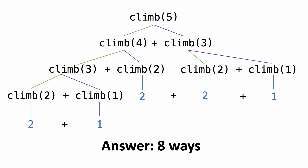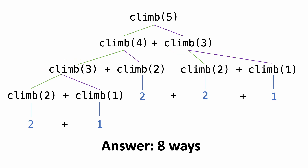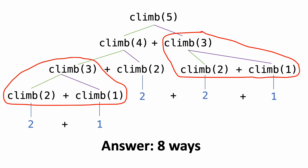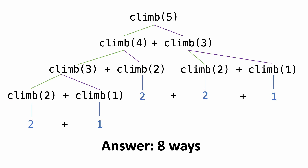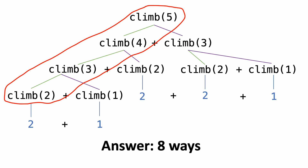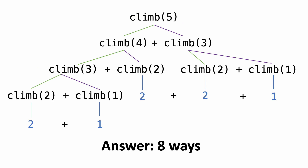This is the fully recursive solution and it works, but let's take a closer look at this tree. Notice that we are calling climb with three twice, climb with two three times, and climb with one two times. We're calling the same function with the same arguments over and over again, which leads to going down the exact same recursive branches multiple times. In the far left branch, with each recursive call n gets reduced by one until we reach n equals two, so the tree has n minus one levels. Since each non-leaf node has two branches, this algorithm runs in O(2^n) time — very inefficient.